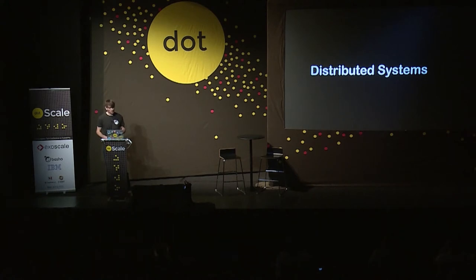Building a distributed system allows a level of fault tolerance to increase availability. It also gives us other properties, like geo-replication — getting your data closer to your end customers. But there's a trade-off when building a distributed system: they have to make some choices during failure states.